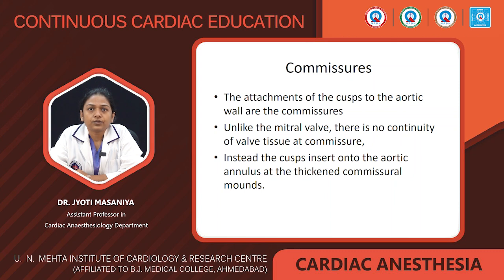Coming to the commissures: the attachments of the cusp to the aortic wall are the commissures. Unlike the mitral valve, there is no continuity of valve tissue at the commissure. Instead, the cusp is inserted onto the aortic annulus at the thickest commissure marks.